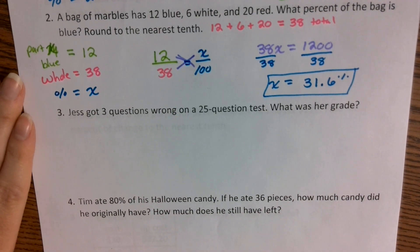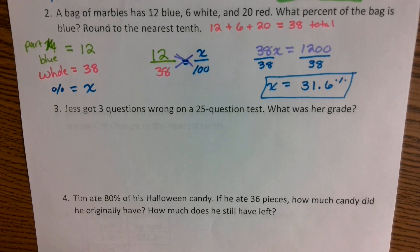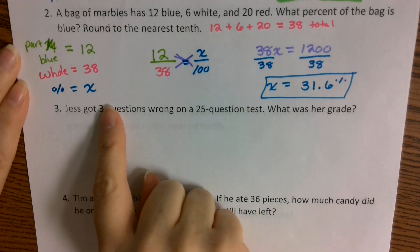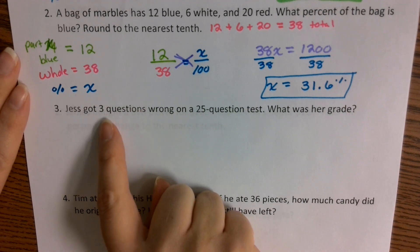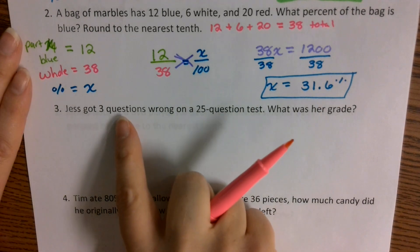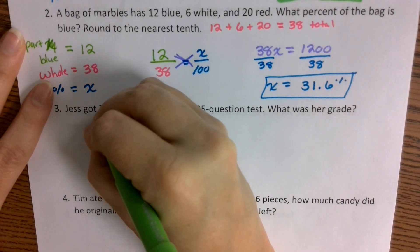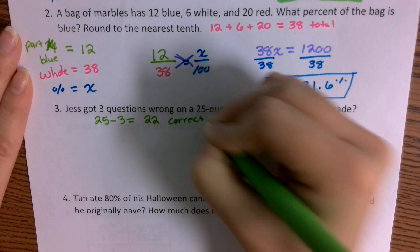Number three: Jess got three questions wrong on a 25-question test. What was her grade? Your grade is based off the percent you got correct. So I don't want to focus on what she did wrong — I want to focus on what she did right. If she got three questions wrong, how many did she get right? 22. If she got three wrong, she got 22 correct. Take 25 and subtract 3, she got 22 correct — and that's what your test grade is based off of.